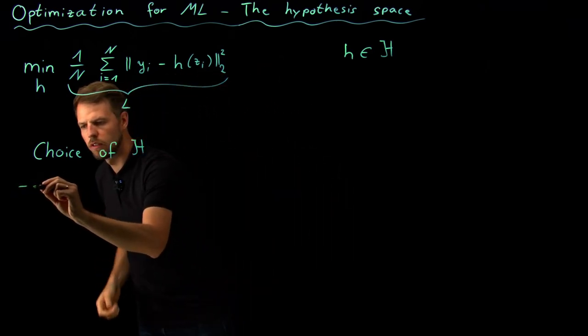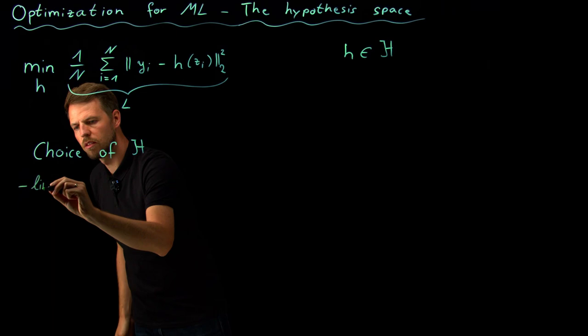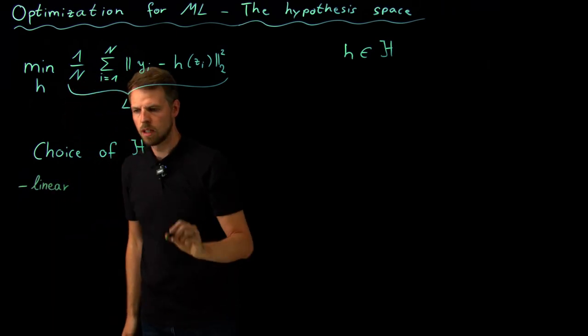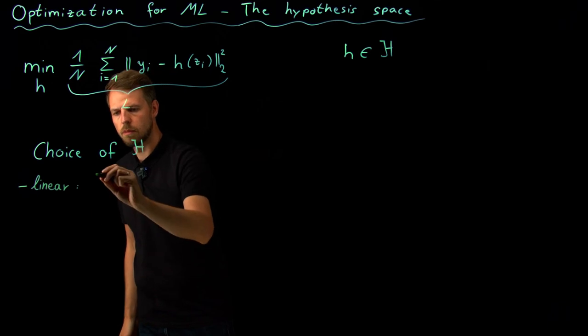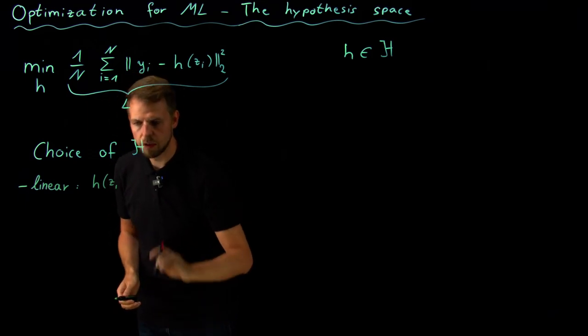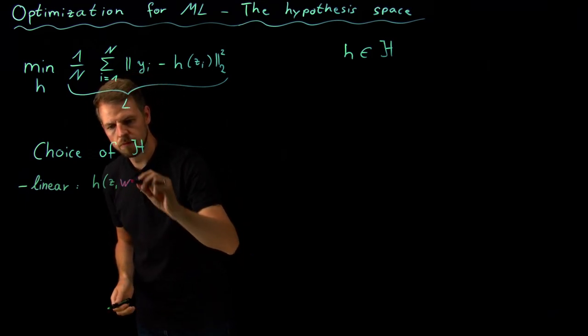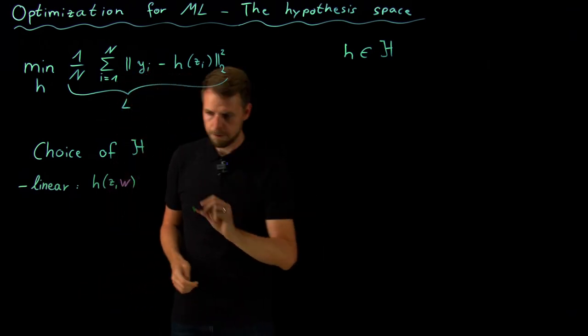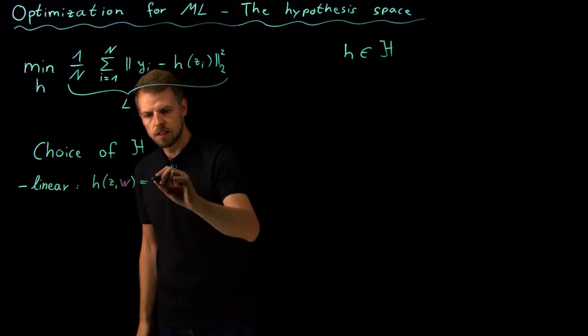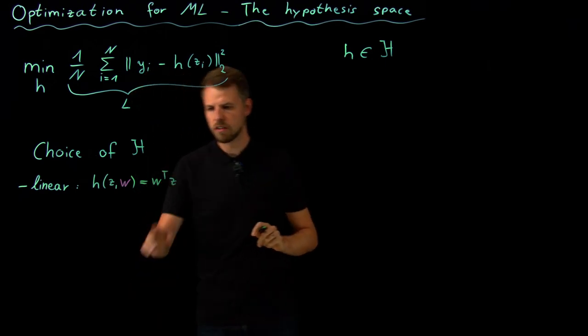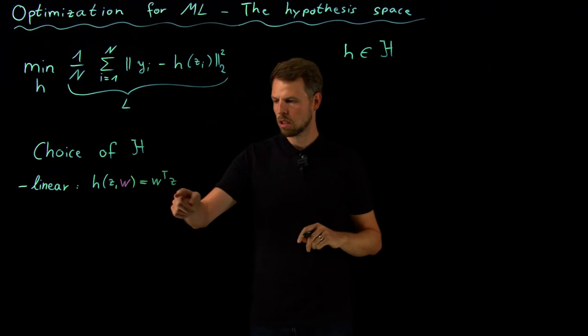So the first thing one can do, and what we have seen already previously, is we can say that we are interested in a linear model. So what this means is my h of z, and now I'm adding a second parameter w, a second argument, this is my parameter, is w transpose times z.